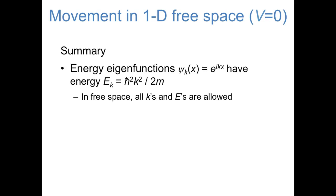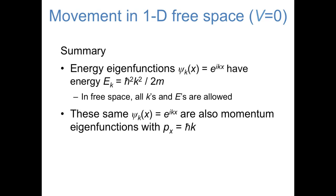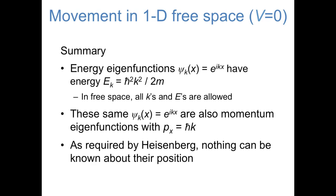To summarize what we learned about a particle in wave function e^(ikx) in free space: e^(ikx) is an energy eigenfunction with energy eigenvalue ℏ²k²/2m, and in free space any value of k is allowed. These same wave functions are also momentum eigenfunctions, corresponding to measured momentum ℏk. But they are not position eigenfunctions — we know nothing about the position, which is consistent with the Heisenberg uncertainty principle: because we know the momentum exactly, we can't know anything about the position.